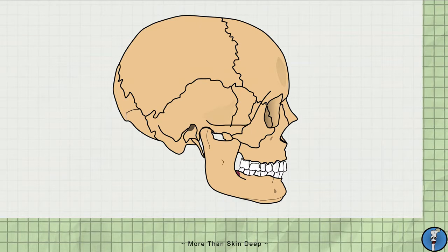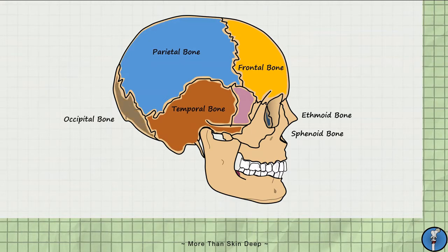It is comprised of 6 bones. From anterior to posterior, these are the ethmoid bone, frontal bone, sphenoid bone, parietal bone, temporal bone, and lastly the occipital bone.